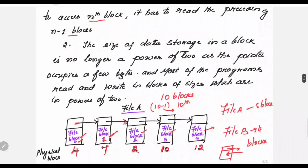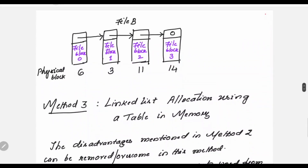Another disadvantage is that data is normally stored in block sizes that are powers of 2. But since part of each block stores a pointer to the next block, the data cannot have a size in terms of powers of 2. This is a disadvantage because most programs read and write in block sizes which are only powers of 2.